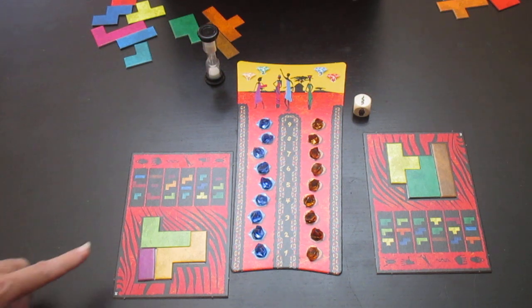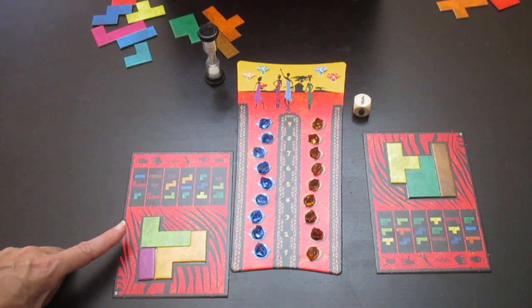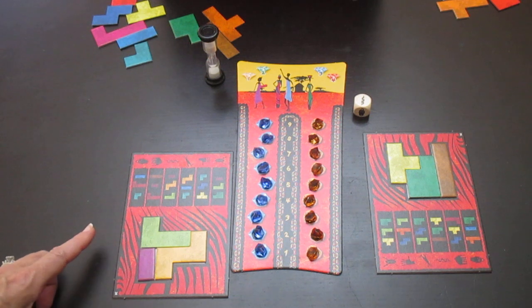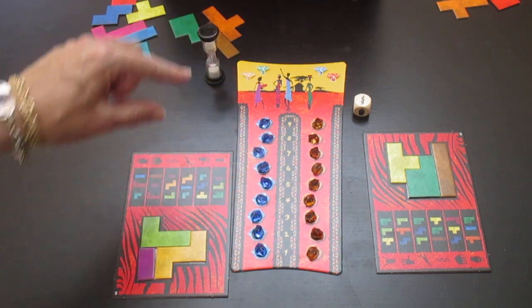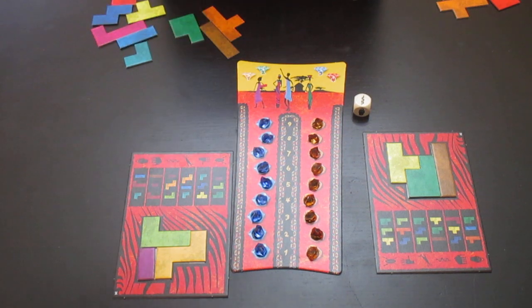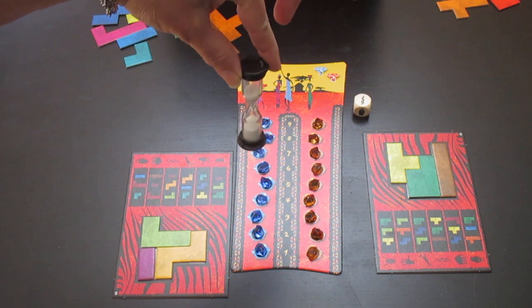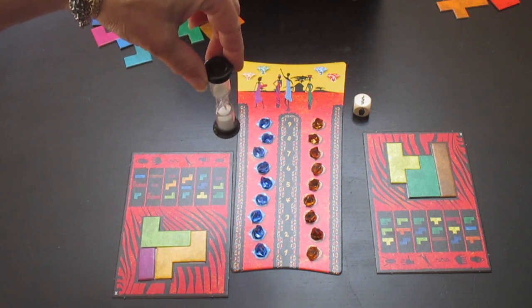The first person that completes it says Ubongo. The second person that completes it also says Ubongo. As the player is completed, if there is still time, they can all keep going and complete it. Once the time runs out, then those that haven't completed it are done.